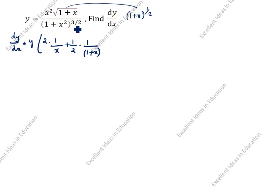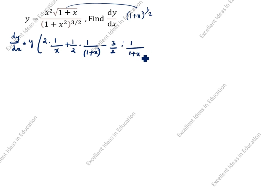After that we look at the denominator. For the denominator we put a minus sign: (1 plus x squared) to the power 3 by 2. So we write 3 by 2 as the power, and then 1 divided by (1 plus x squared). Now we differentiate x squared, which gives 2x to the power 1, equal to 2x. So we write 2x.